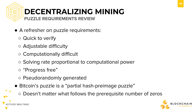You need a solving rate proportional to computational power, meaning that the difficulty reflects the amount of hash power in the network. A puzzle should be progress-free, meaning that finding a hash does not make it easier to find the next hash. Every solution is independent of the previous ones. Lastly, you need a pseudo-randomly generated puzzle.